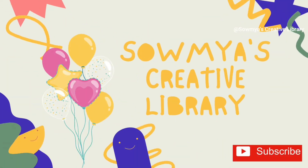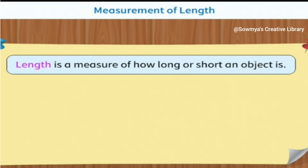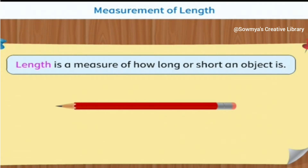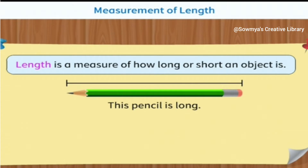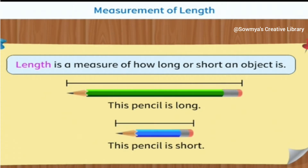We can measure the length of objects. Length is a measure of how long or short an object is. For example, this pencil is long. This pencil is short.